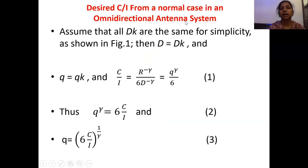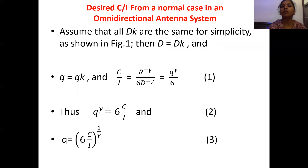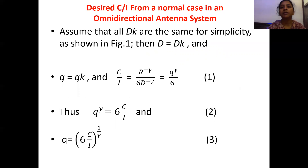In the next lecture, we will determine the C/I from a normal case in an omnidirectional antenna system — specifically, what is the minimum carrier-to-interference ratio in the normal case of the omnidirectional antenna system, what the normal case is, and what the omnidirectional antenna system means. We will see this in the next video. Thank you.